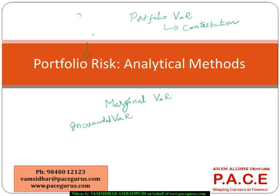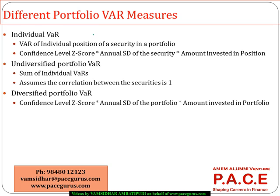When talking about value at risk initially for individual securities, for an equity security if I want to compute the value at risk, all we are talking about is finding out the standard deviation of the security and multiplying it with the confidence level z-score — the z-score of the confidence level.